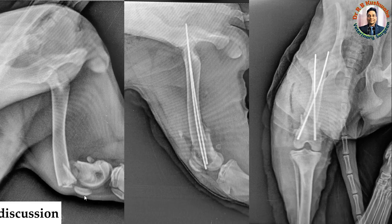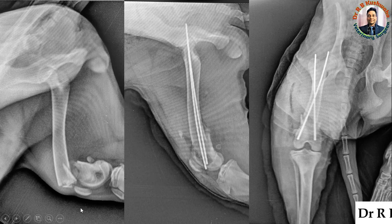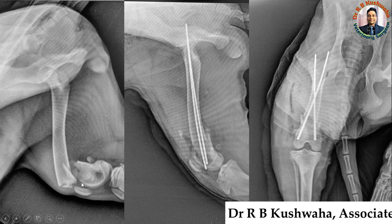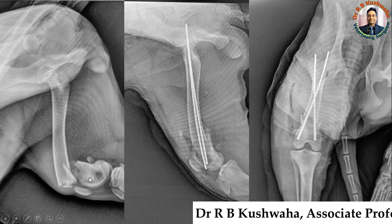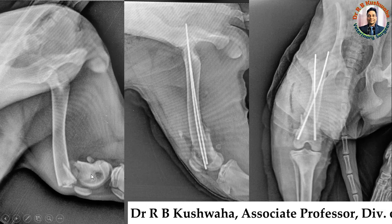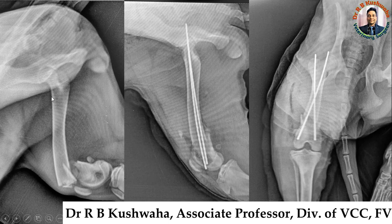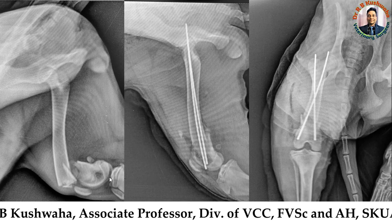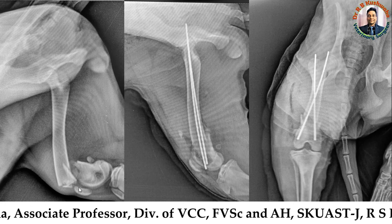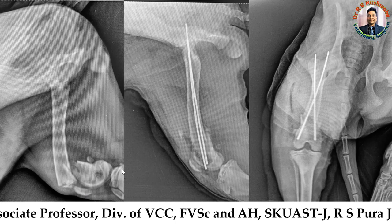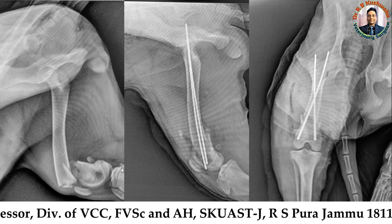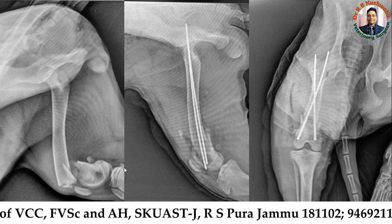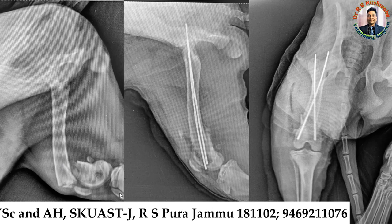This is the first case. You can see the pre-operative radiograph of the femur bone. The fracture is just above the condyle, which is why it is called a supracondylar fracture. This is the proximal fracture fragment and this is the distal fracture fragment. This is the patella. The physis, or epiphyseal plate, or growth plate, is still intact, indicating this is a young animal.